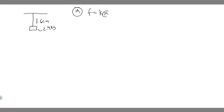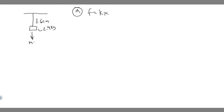We know X is the distance, which is 3.6 centimeters that the scale is being stretched. The force being applied here — since we have something hanging — is just going to be the weight force, which is mg, the force due to gravity. So the force in this case is just mg, meaning mg is equal to K times X.